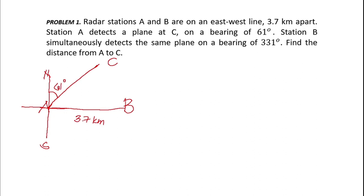Station B simultaneously detects the same plane on the bearing of 331 degrees. From due north at B: 90, 180, 270, and 331 degrees — so the extra beyond 270 is 61 degrees. Therefore the bearing from B to the plane makes a 61-degree angle on the west side.